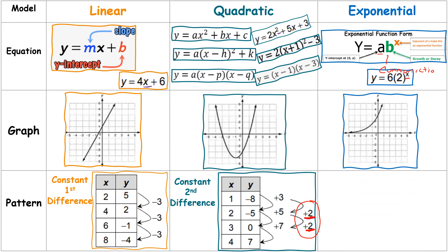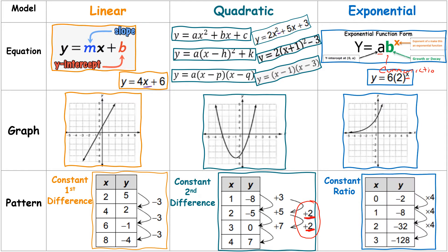The exponential graph slowly approaches the x-axis on one end and rises steeply on the other — that distinctive shape is called exponential. Instead of a constant difference, you have a constant ratio: with linear and quadratic you're adding or subtracting the same number, but with exponential you're multiplying or dividing by the same number. For example, from negative 2 to negative 8 you're multiplying by 4. The second difference identifies quadratic, and the first difference identifies linear.